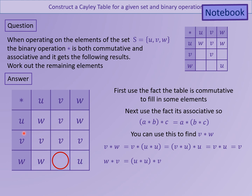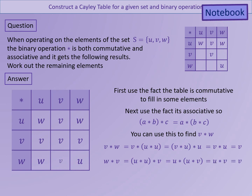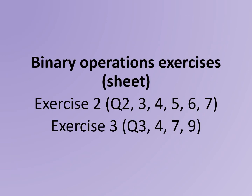We are looking for W operation V. We replace W with U operation U from the table, then move the brackets using associativity, which confirms the answer is V as expected. Now complete the questions from the binary operation sheets, exercise 2 and exercise 3.